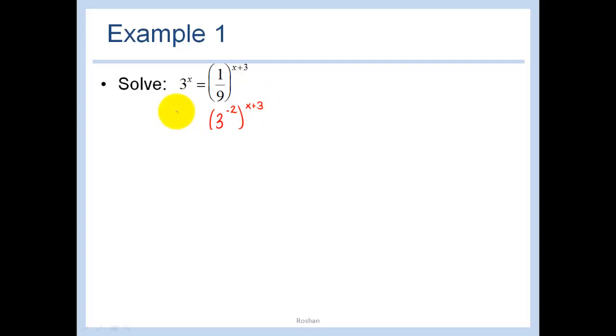So we say 3 to the x is equal to 3 to the negative 2 to the x plus 3. When we have a power to a power we multiply the exponent, so we have negative 2x minus 6. Now we have the same bases so we can say x is equal to negative 2x minus 6. Let's move this 2x over and get 3x is equal to negative 6. In other words, x is equal to negative 2.